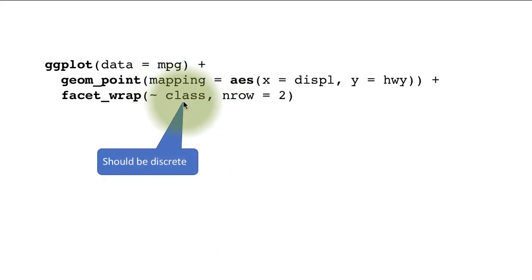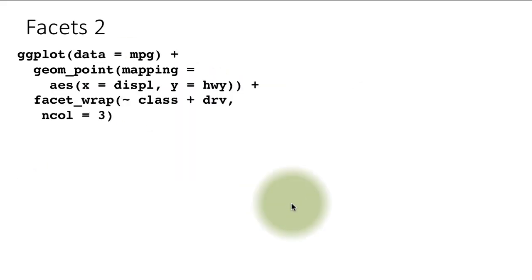Of course, what you put here should be a discrete variable. Actually R will do the job even if you put a continuous variable, but it doesn't make any sense. Let's look further at facets.